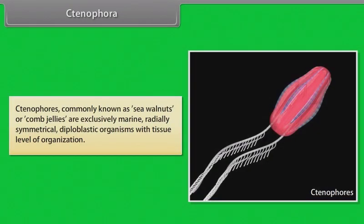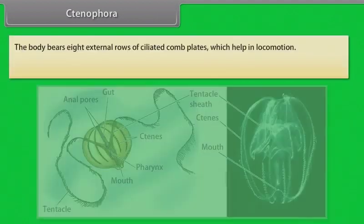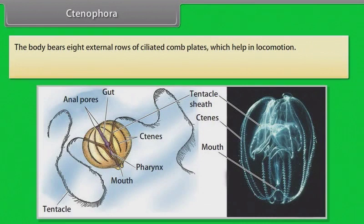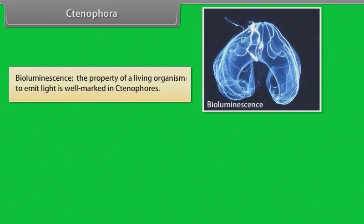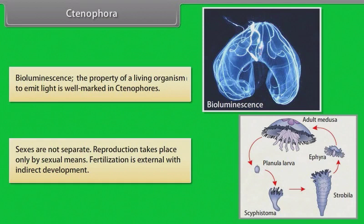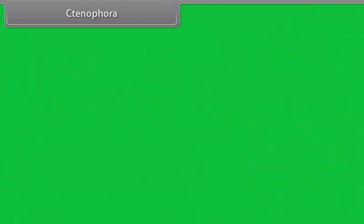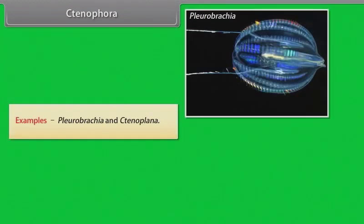Ctenophora, commonly known as sea walnuts or comb jellies, are exclusively marine, radially symmetrical, diploblastic organisms with tissue level of organization. The body bears eight external rows of ciliated comb plates which help in locomotion. Digestion is both extracellular and intracellular. Bioluminescence — the property of a living organism to emit light — is well-marked in Ctenophores. Sexes are not separate and reproduction takes place only by sexual means. Fertilization is external with indirect development. Examples: Pleurobrachia and Ctenoplana.